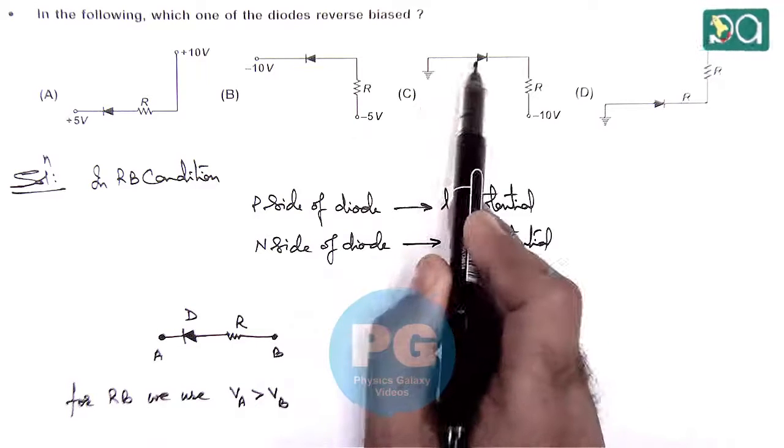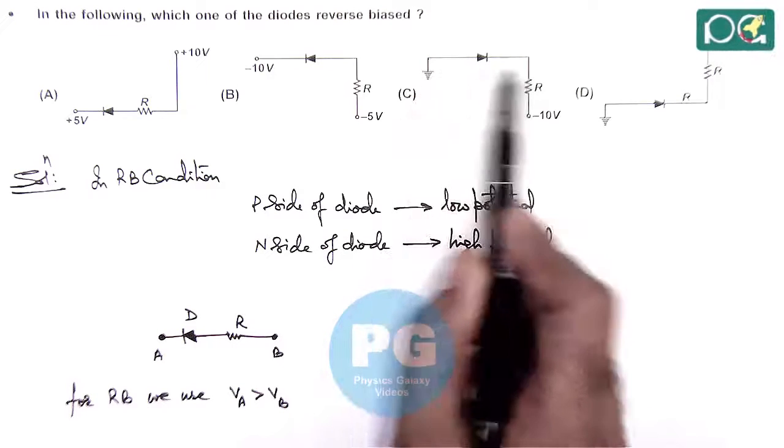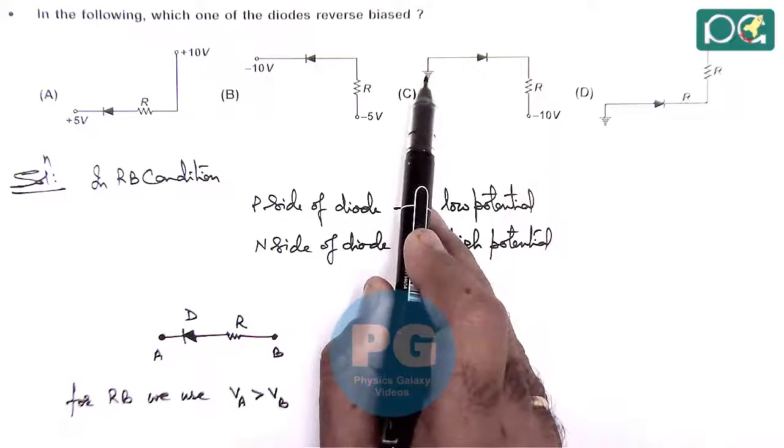In option C, the P side is at 0 and the N side is at minus 10. This is also forward bias.